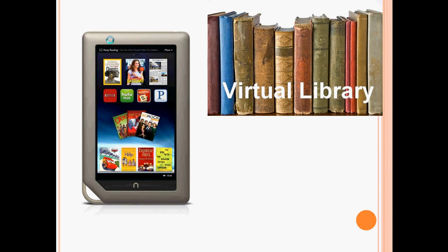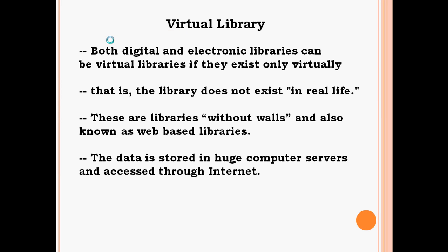When these digital libraries are placed on the internet and accessed through internet connectivity, such libraries are called virtual libraries or web-based libraries. Both digital and electronic libraries can be virtual libraries if they exist only virtually, that is, the library does not exist in real life. These are libraries without walls, also known as web-based libraries.